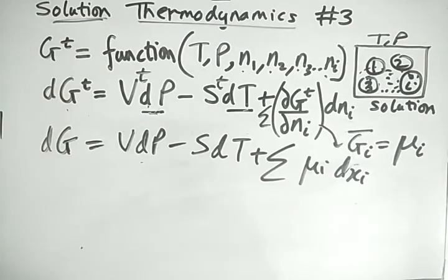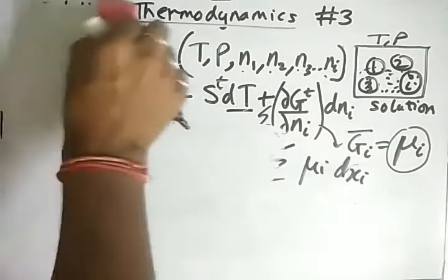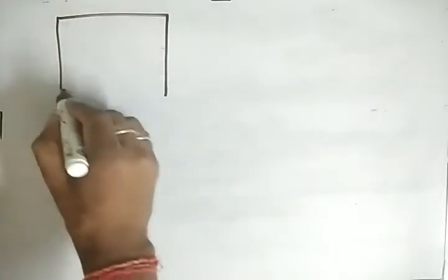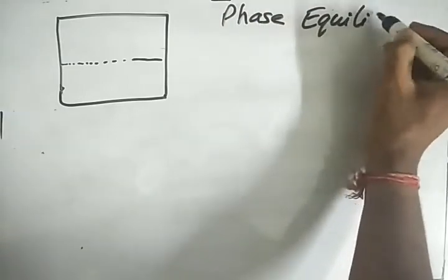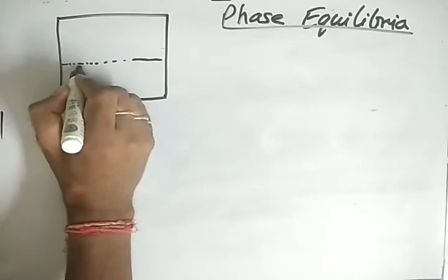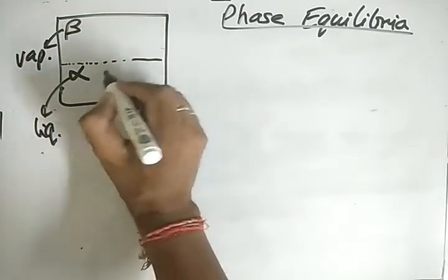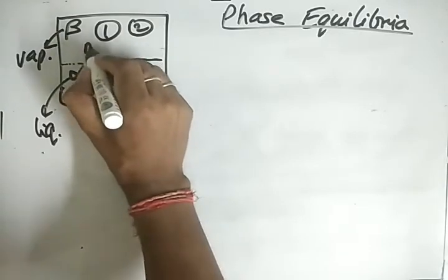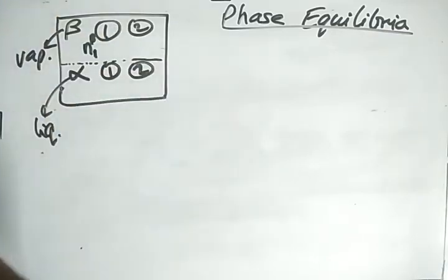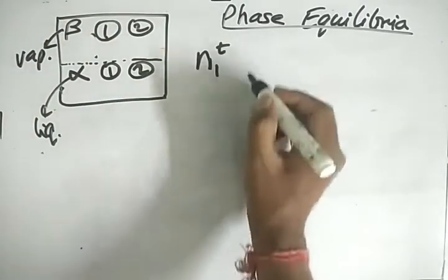Next we look at phase equilibrium to gain more understanding of mu-i. Let's consider a system with two phases — alpha phase and beta phase. Alpha can be liquid and beta can be vapor. We take two compounds present in both phases. Compound one in the alpha phase has moles n1-alpha, and in the beta phase n1-beta.